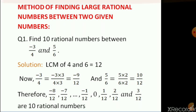The LCM of 4 and 6 is 12. Converting minus 3 upon 4 into equivalent term we get minus 9 by 12, and 5 by 6 becomes 10 by 12. Now we can clearly see that from minus 9 to positive 10 there are many numbers, so you can write any 10 rational numbers as your answer.